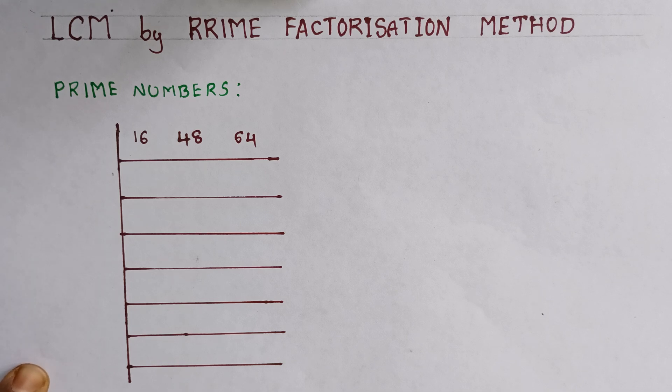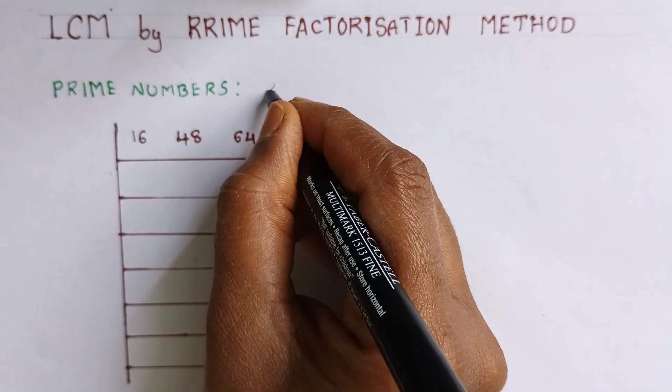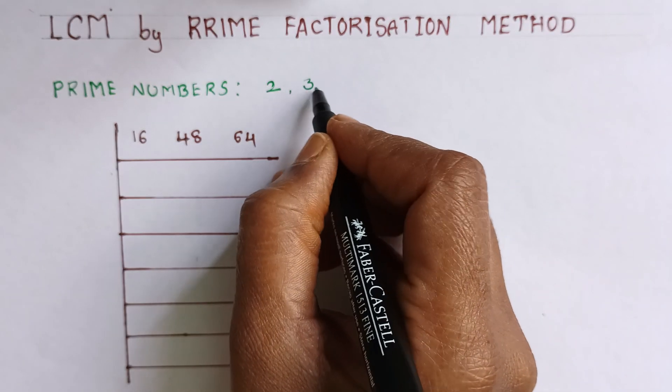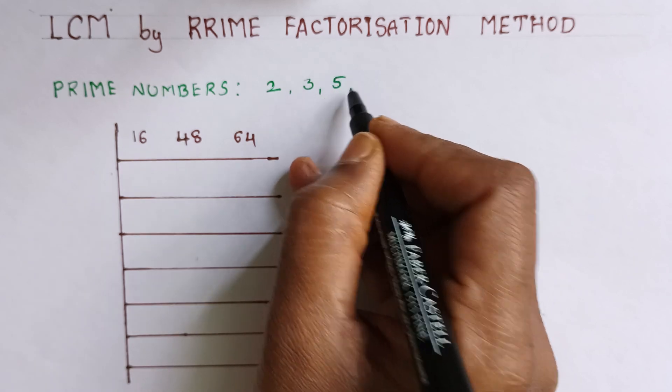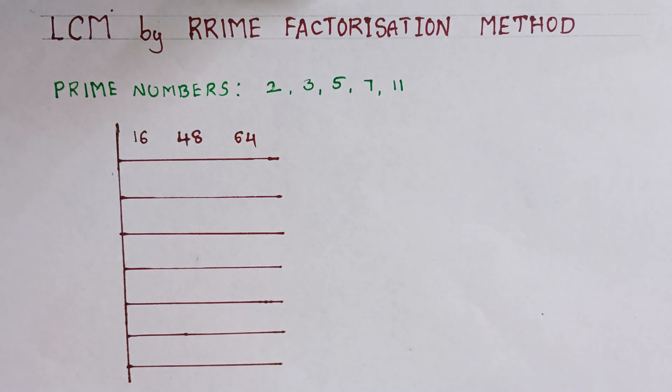Prime number means a number that can be only divided by one and itself. So that means it starts from two, which is an even prime, and three, five, seven, eleven, and so on.